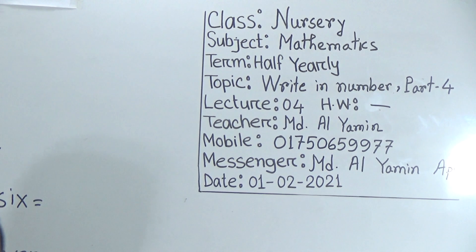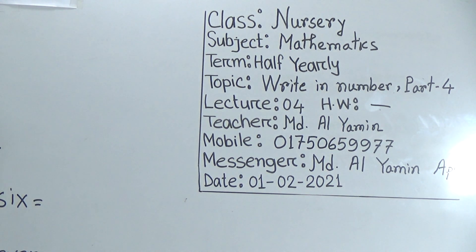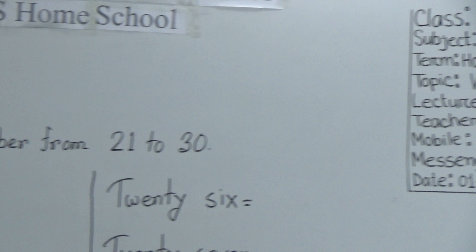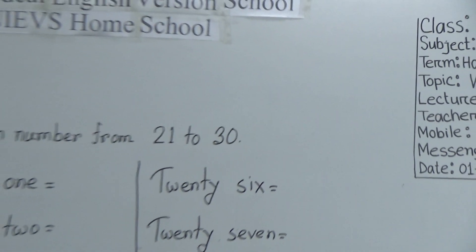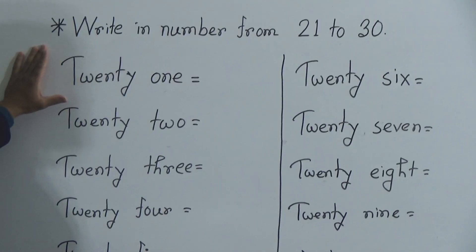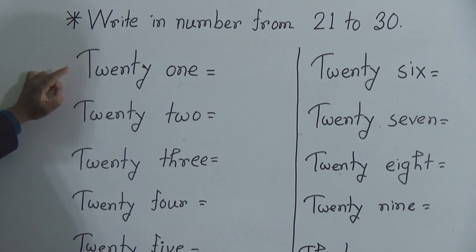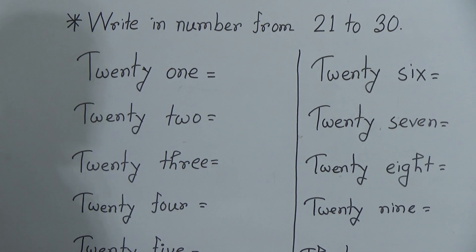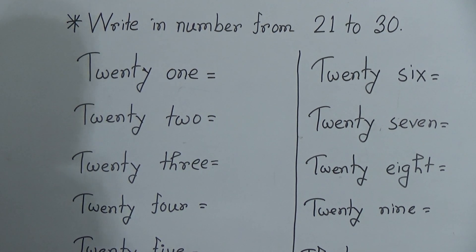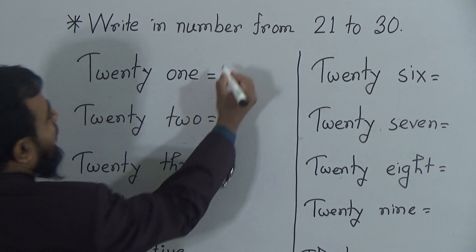In writing number parts one, two, and three, we learned numbers one to twenty. Today we will learn from number twenty-one to thirty — that means how to write down numbers from twenty-one to thirty. The first number today is twenty-one.